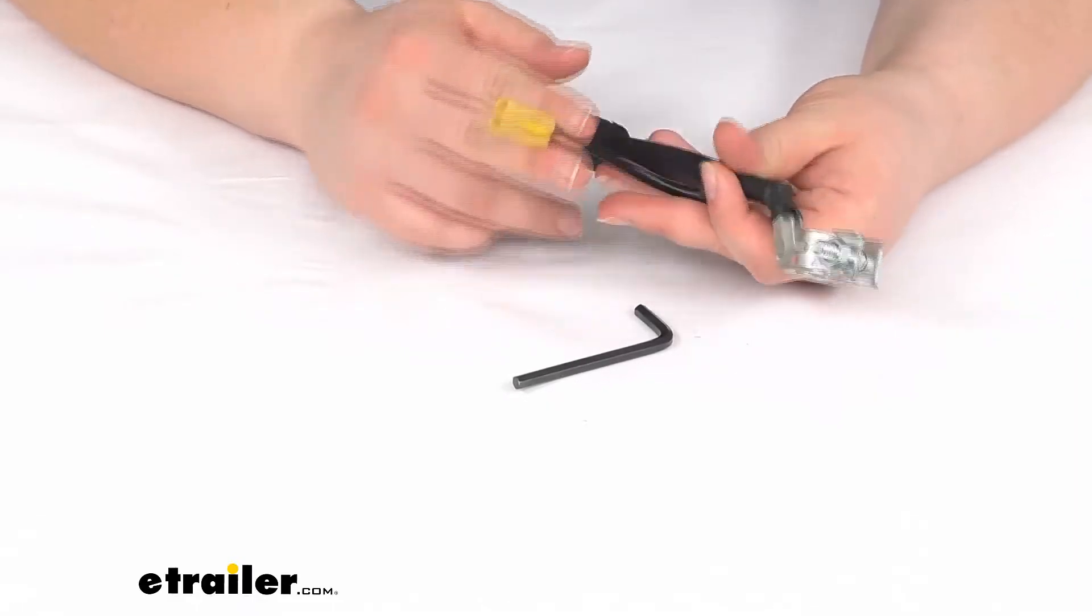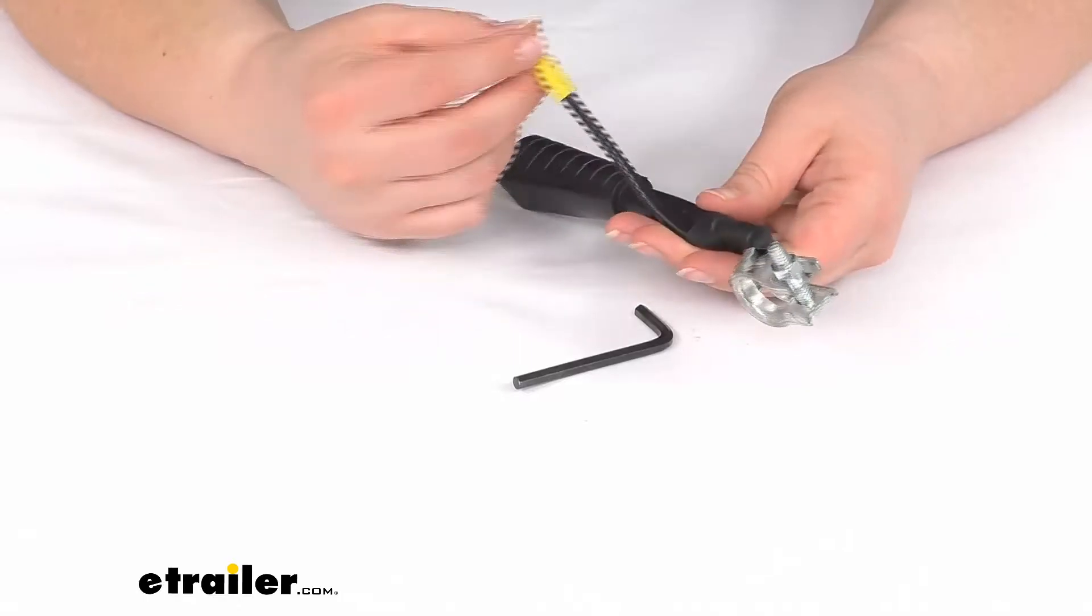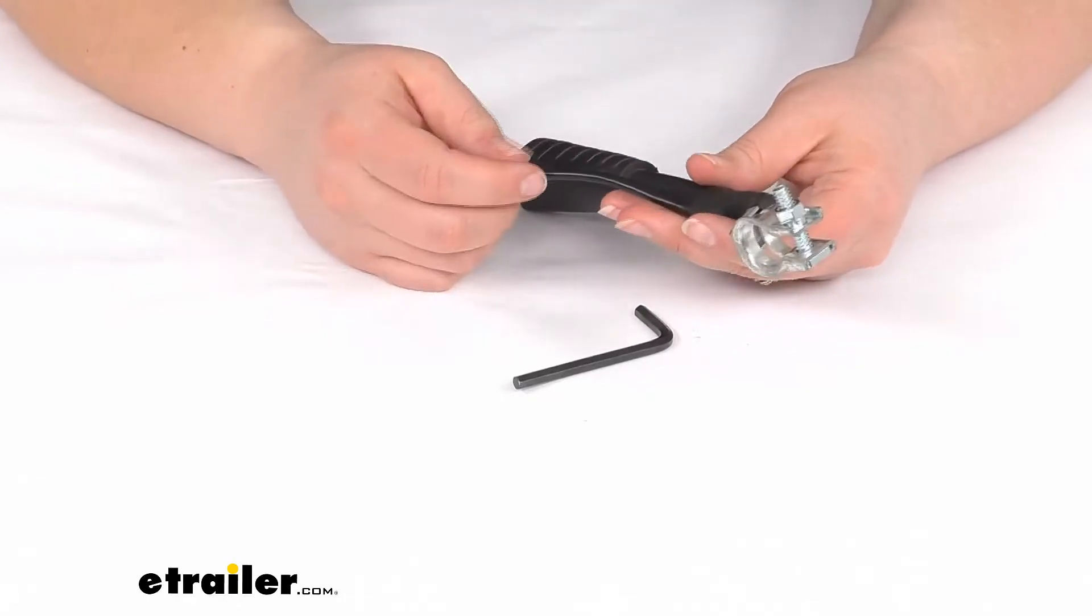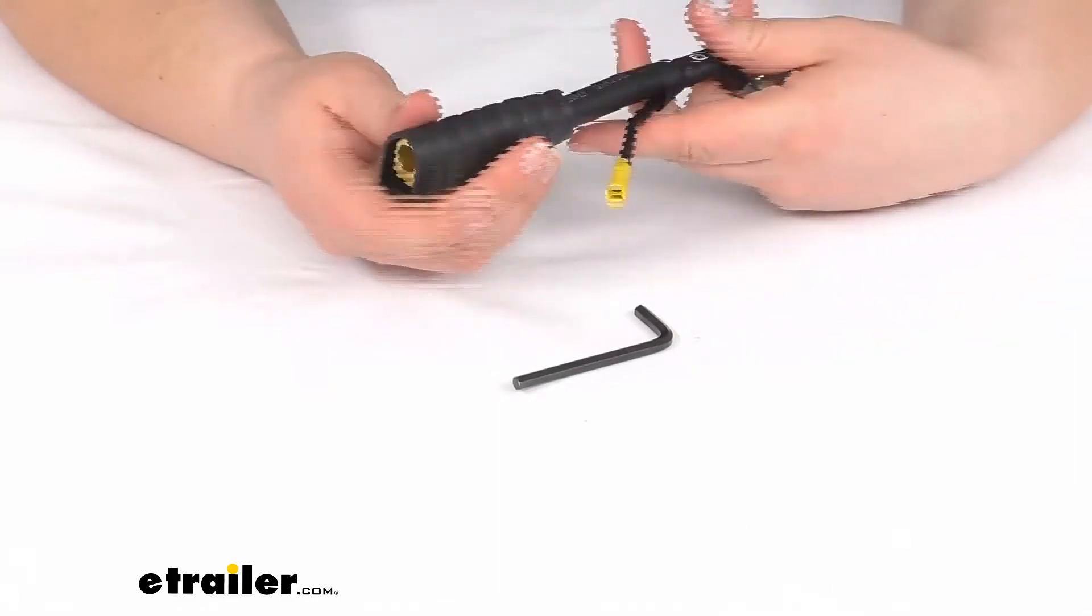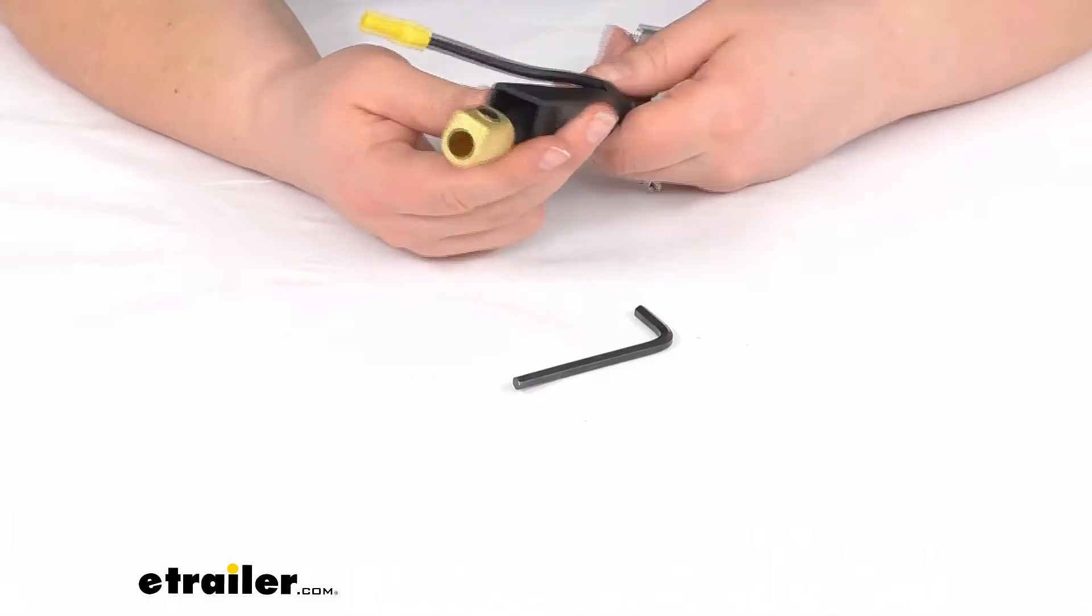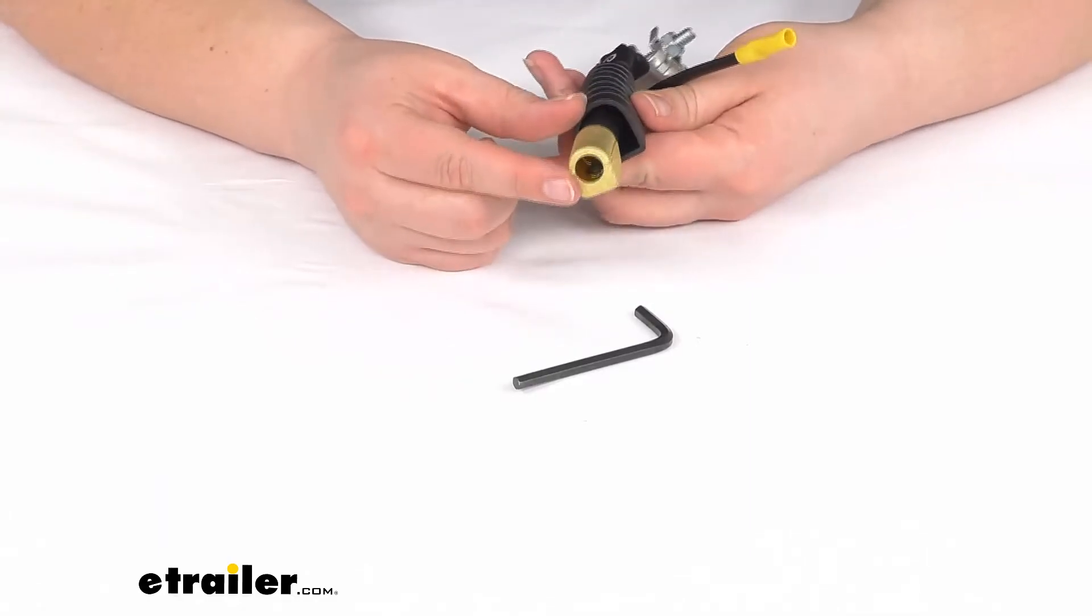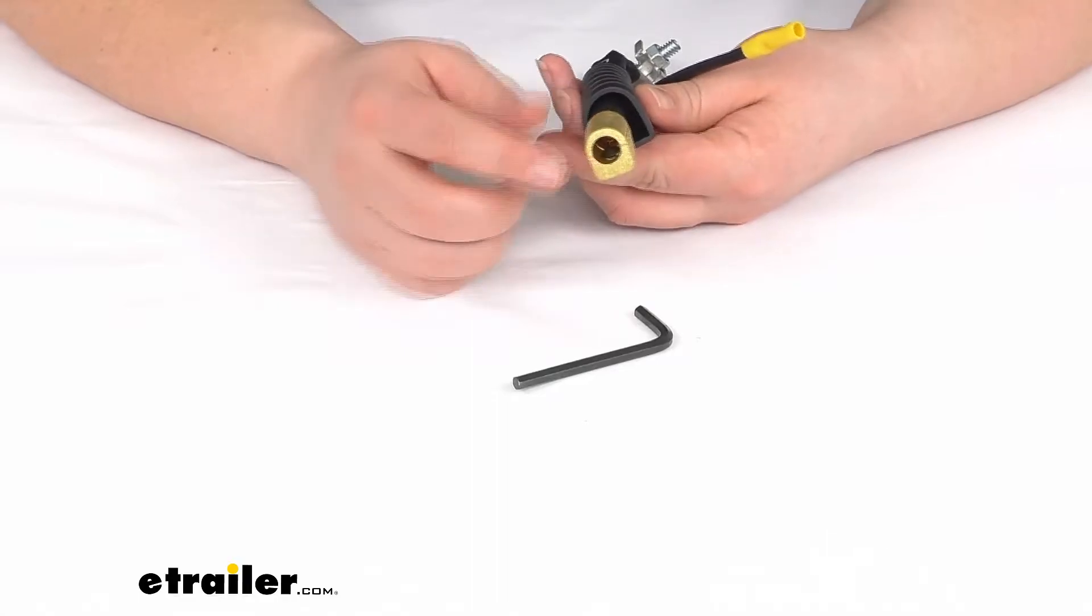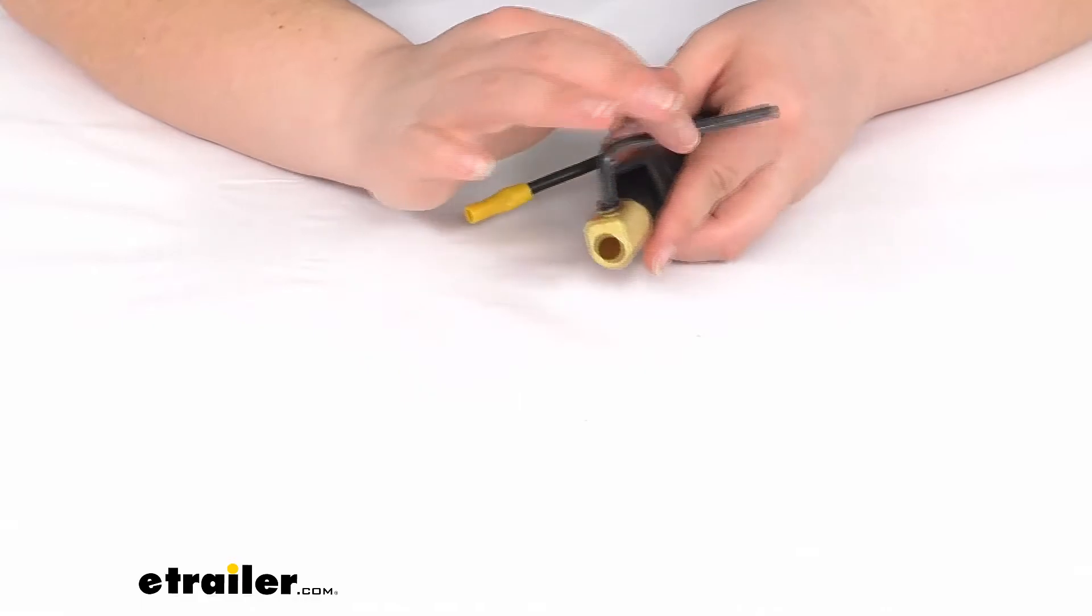It also has an auxiliary connection if you have any other connections to make to that battery terminal, like a solenoid start. It comes with a tool to adjust the set screw. If we remove or slide back this cover, it's going to reveal our connection here where we can slide in our larger gauge wire and tighten that down with that set screw.